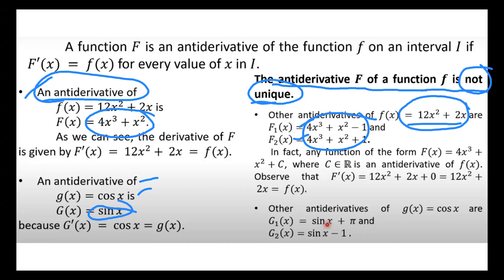Later I will introduce theorems so we have only one answer. Without a theorem, there are many possible antiderivatives for a specific function. In fact, any function of the form F(x) = 4x³ + x² + C, where C is any real number, is an antiderivative of f(x). We are not limited to just two antiderivatives.